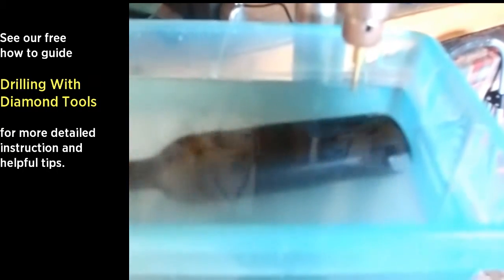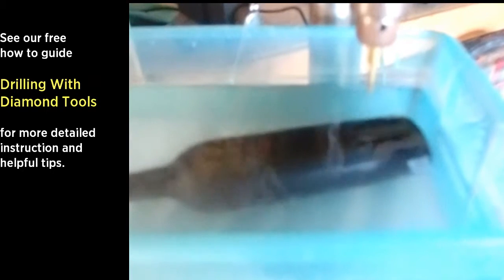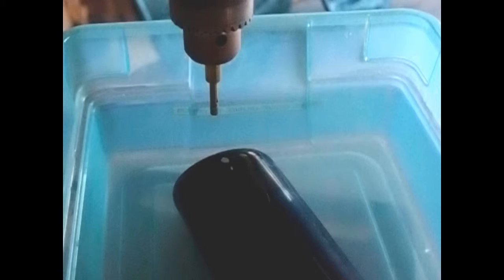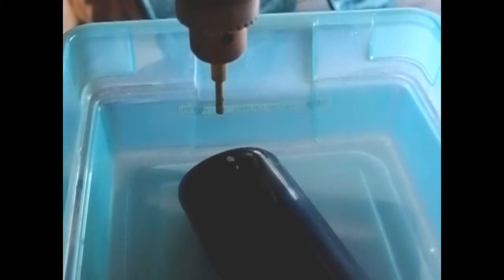We've also checked to make sure the throw of the bit is enough that we'll be able to drill all the way through our bottle. For this project we're using a quarter inch diameter core drill, but the process is the same regardless of the diameter bit.